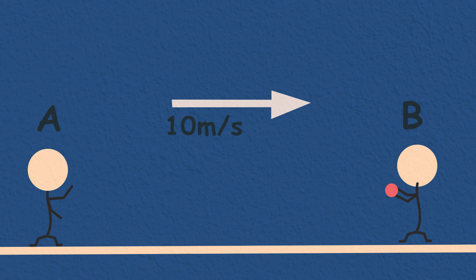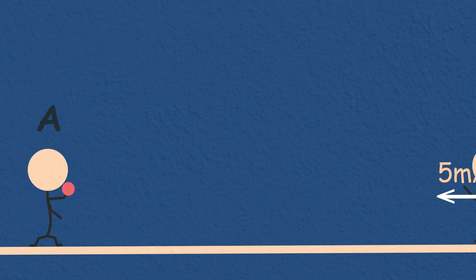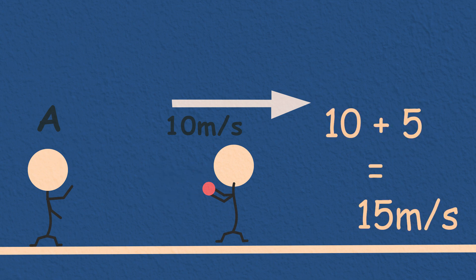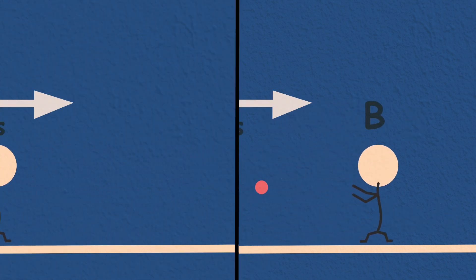Now let's say this time B is moving towards A at 5 meters per second, when A threw the ball at B at 10 meters per second. This time B would see the ball coming at him at 15 meters per second. You see how the speed of the ball changes for B, depending on how he moves relative to A.